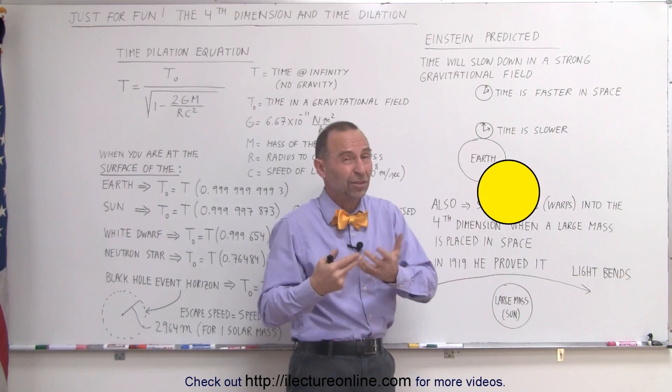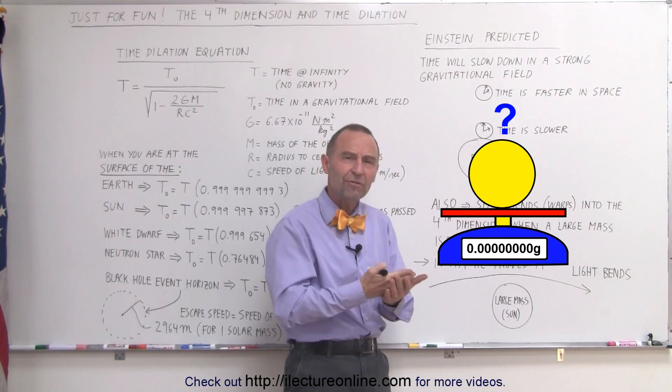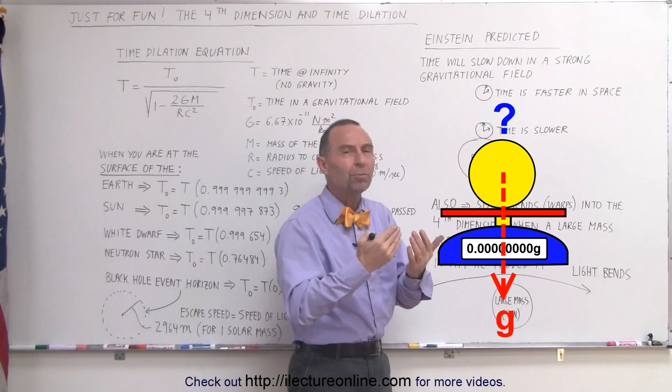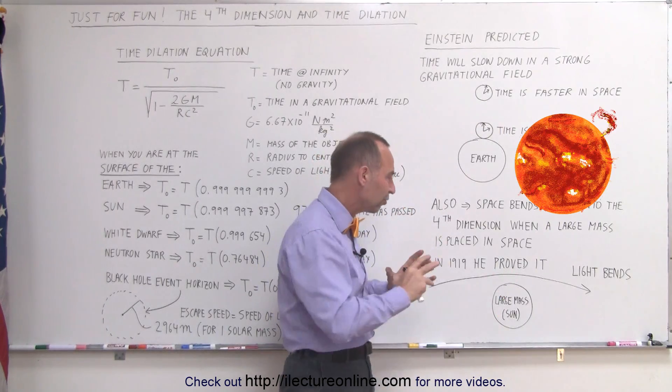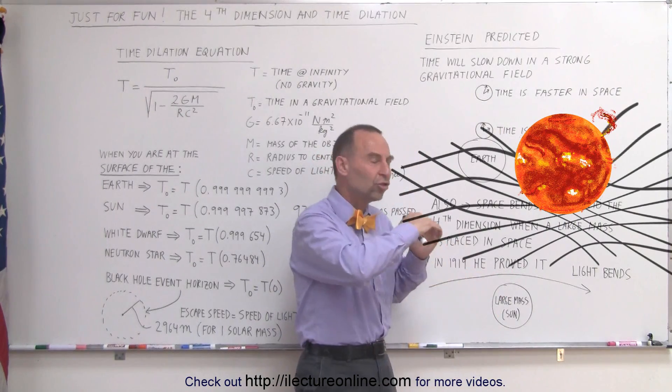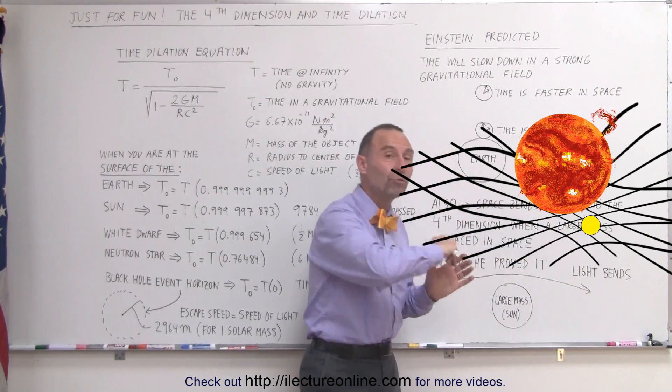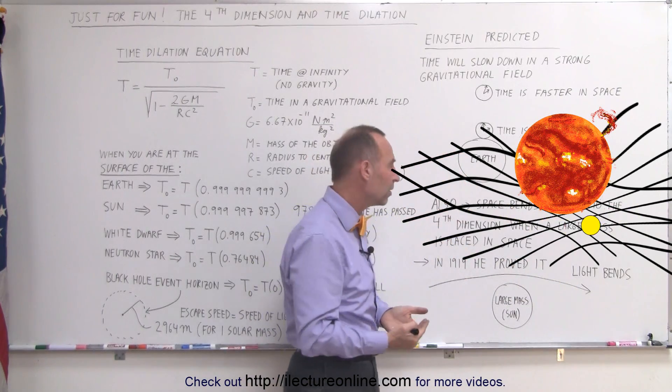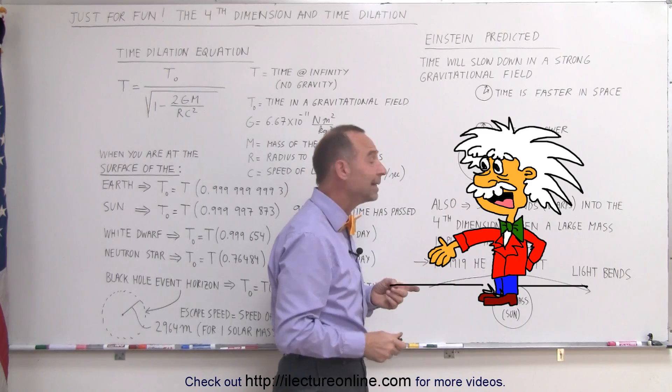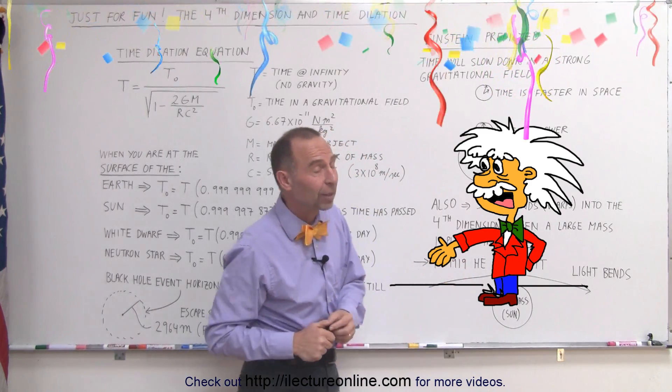Now, that's kind of mysterious because light doesn't have any mass. And how can it be affected by gravity? Well, that's because a large mass placed in space actually changes space around it, which causes light to follow that change or that bend in space. He proved that in 1919 and became world famous because of that.